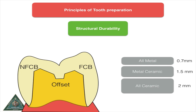For structural durability, you need adequate width of the restoration. All-metal restorations require at least 0.7 mm width, metal-ceramic requires at least 1.5 mm width, and all-ceramic requires 2 mm of adequate width. Whenever you have a functional cusp bevel — where the functional cusp opposes and you are expecting maximum load — you will need an additional 1.5 mm reduction for the functional cusp bevel.